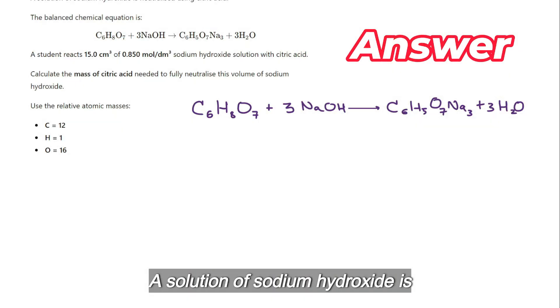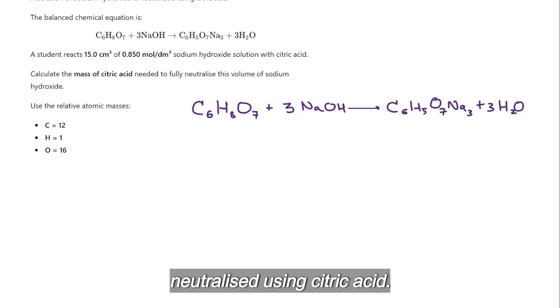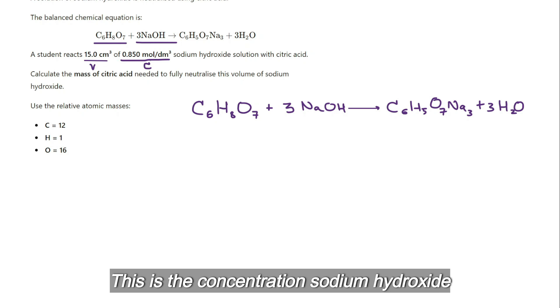Sodium hydroxide and citric acid form these two products. A student reacts 15 cubic centimeters of 0.850 moles per cubic decimeter sodium hydroxide solution with citric acid. This is the volume, this is the concentration.